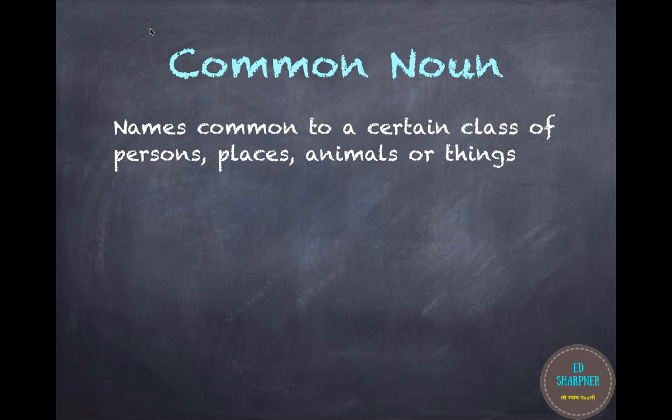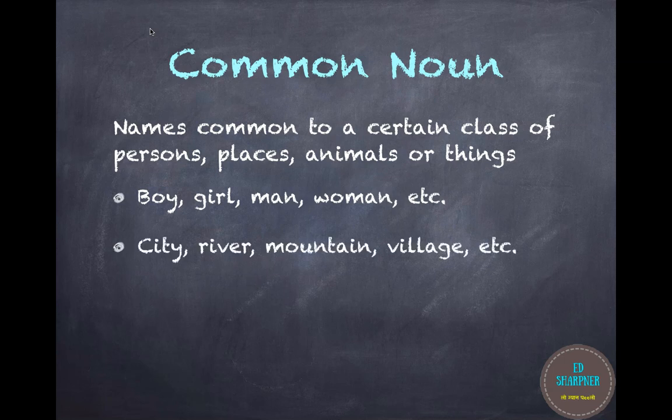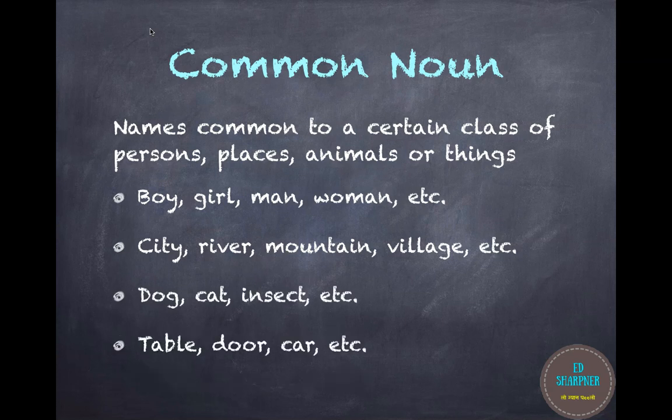The next type is a common noun. The names common to a certain class of persons, places, animals, or things are called common nouns. For example, a boy, girl, man, woman — they are types of person. For places, a city, a river, a mountain, a mountain range, or a village, etc. These nouns define a certain class of persons, places, animals, or things.